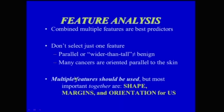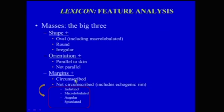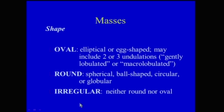Don't just select one feature — parallel or wider than taller is not always benign, as many cancers can also be parallel to the skin. The lexicon feature analysis of masses — the big three — includes shape, orientation, and margins. Shape includes oval (including macro-lobulated), round, or irregular. Orientation is parallel to the skin or not parallel. Margins include circumscribed or not circumscribed, with the echogenic rim now included in this section. Under non-circumscribed: indistinct, micro-lobulated, angular, and spiculated. Oval masses are elliptical or egg-shaped and may include two or three undulations. Round is spherical, ball-shaped, circular, or globular. Irregular is when it's neither round nor oval.